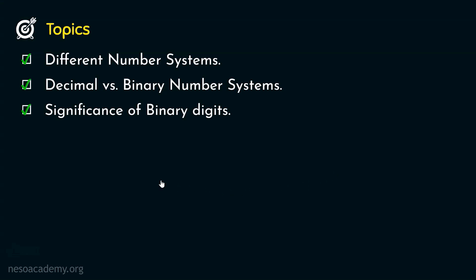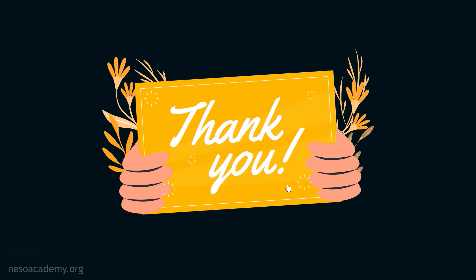So in this session we covered these topics: the different number systems — specifically binary and hexadecimal, which we are going to use in here. We also had the comparative study of decimal and binary number systems. And finally, we learned the significance of binary digits or bits in terms of integrated circuits. In the next session, we are going to learn in detail about the hexadecimal number system. I hope to see you in the next one. Thank you all for watching.